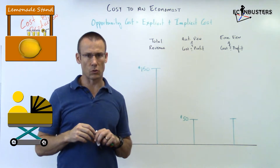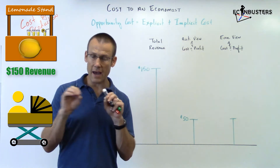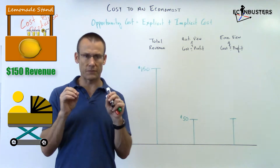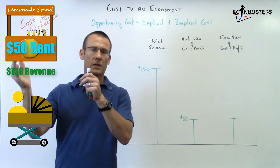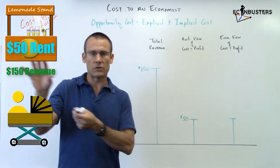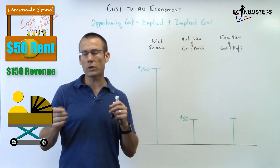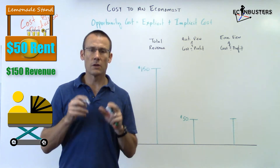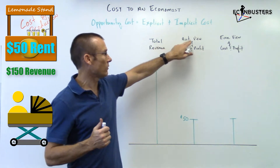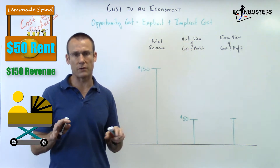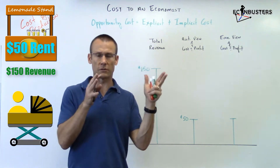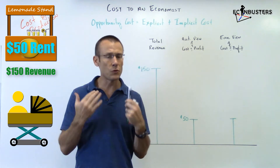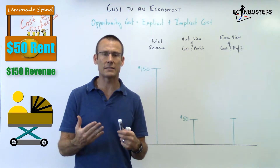She could have opened up a lemonade stand and made $150 in total revenue. Her cash outlay — the total amount of money she would have had to spend — was $50. She'd rent everything she needed and return it at the end of the day. So total cash outlay: $50, total revenue: $150. If we asked the accountant, did she make a profit? The answer is an enthusiastic yes.